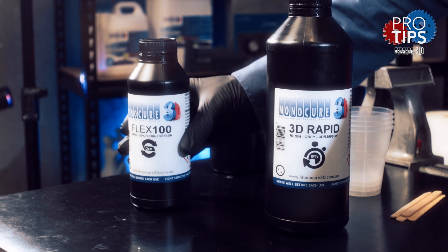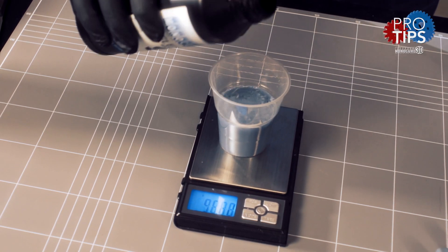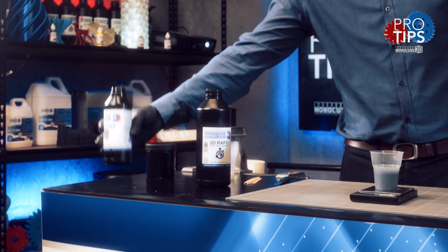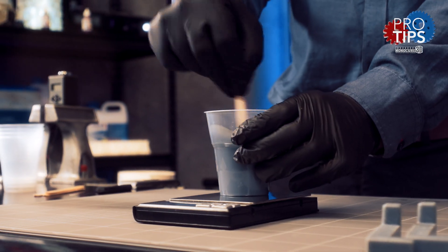Just leave the scale without zeroing it, and now pour in the Flex 100 until you get 100 grams in total. Give it a really good stir and make sure the two parts are mixed well together.